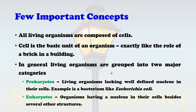In general, living organisms are grouped into two major categories. The first are prokaryotes — these are living organisms lacking a well-defined nucleus in their cells. An example is a bacterium like Escherichia coli. The next group is eukaryotes — these are organisms having a nucleus in their cells, besides several other structures, when compared with prokaryotic cells.